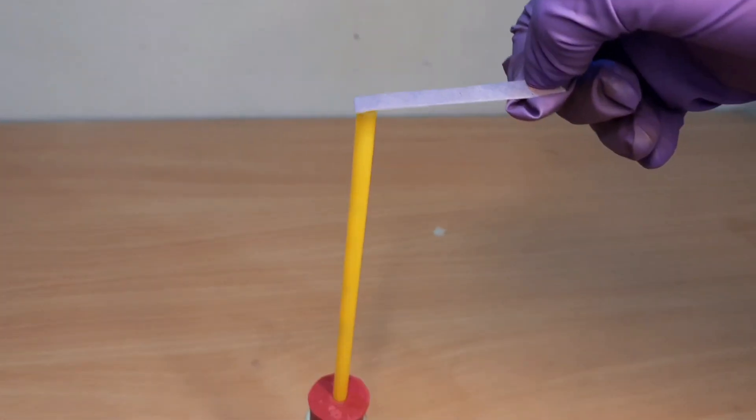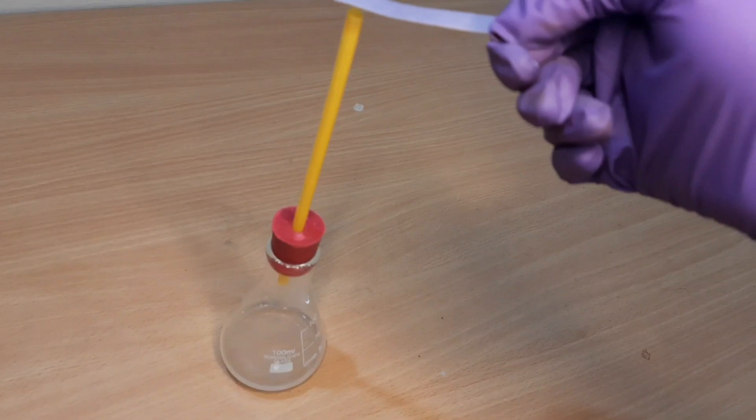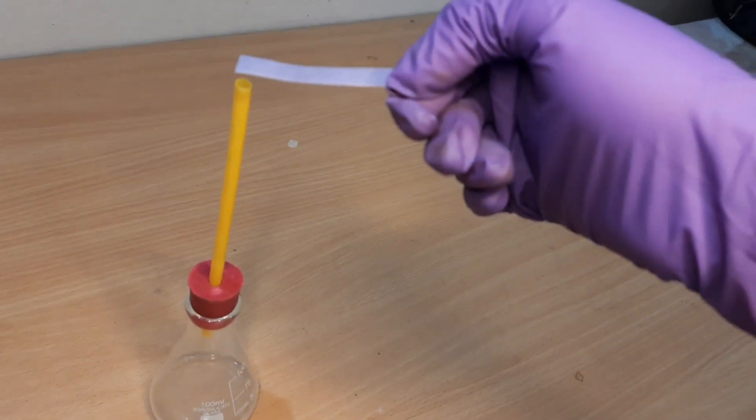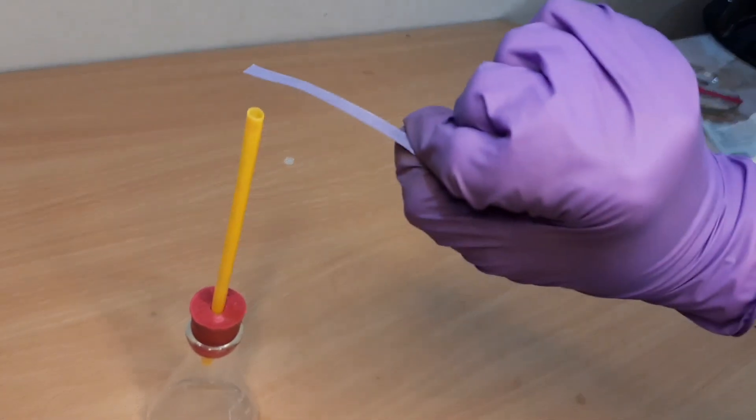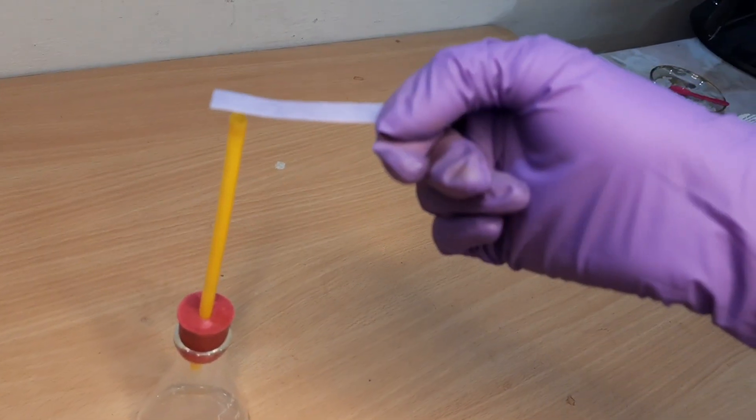Hold the dry blue litmus paper in hydrogen chloride gas. There is no change in the color of the dry blue litmus paper. This shows that hydrogen chloride gas does not behave as an acid in the absence of water.